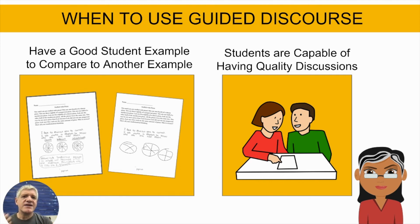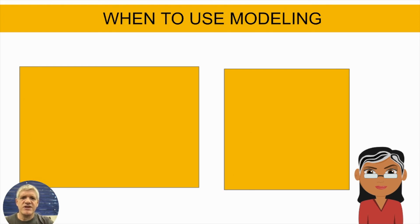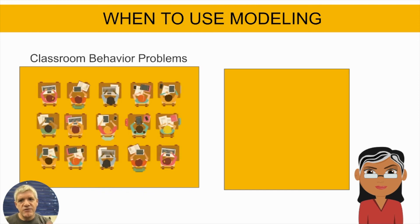Now, what if they're not capable of this or what if you don't have a good example? Well, that's kind of your two things for modeling. Modeling would be a better approach for you to take if you've got some classroom behavior problems. The students aren't ready to have discussions like that among themselves. So they're just not ready to be focused like that. And so they need something like the teacher to watch and be more focused on. That's a good time to use modeling.